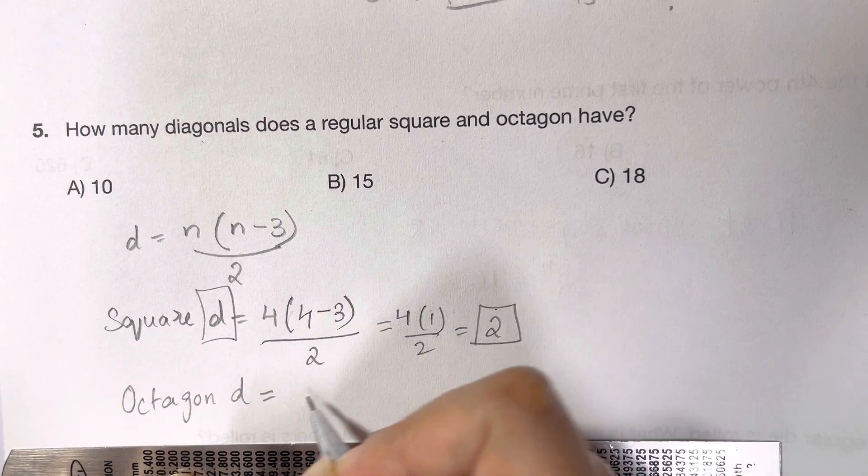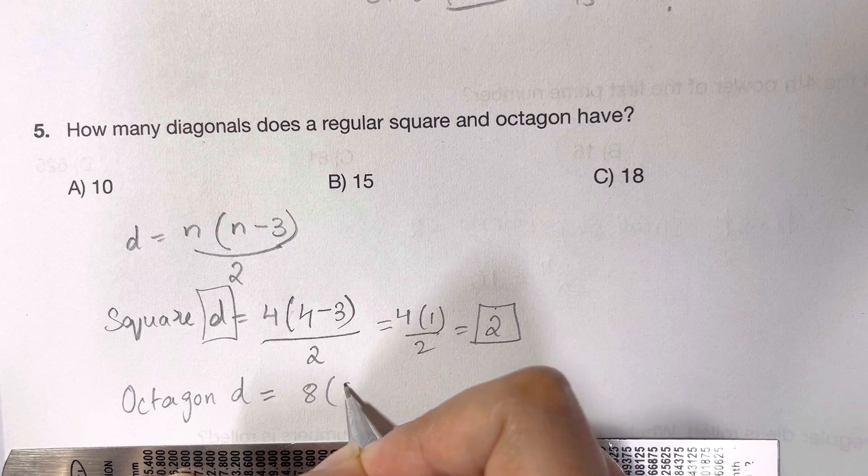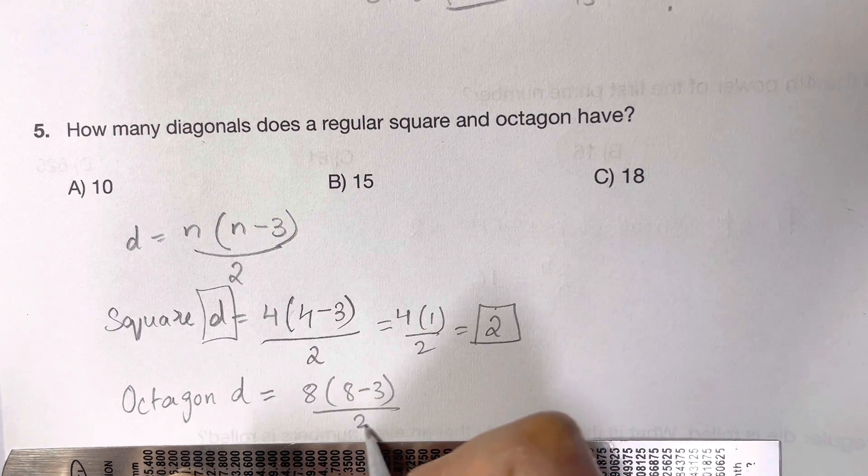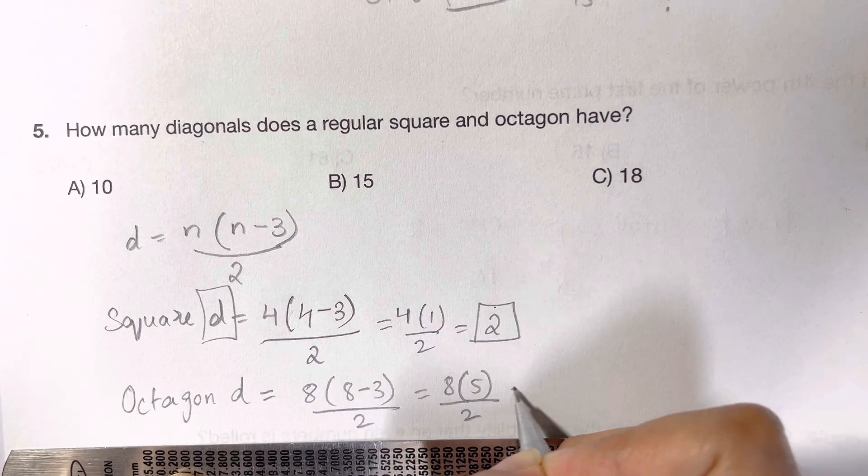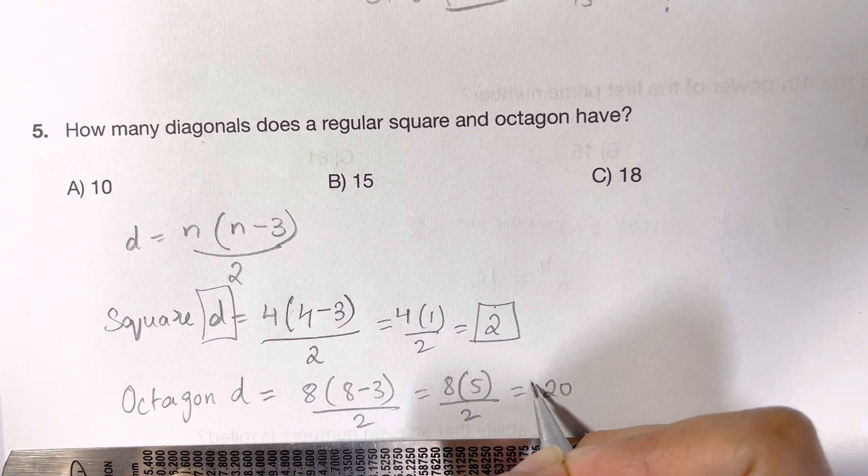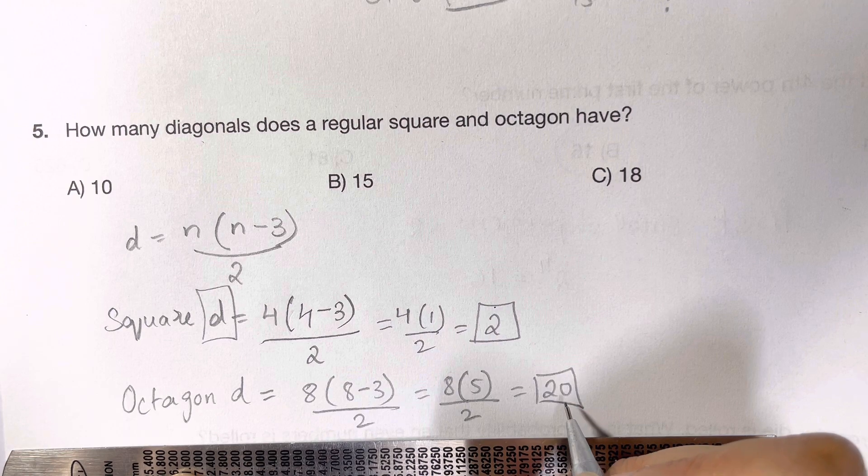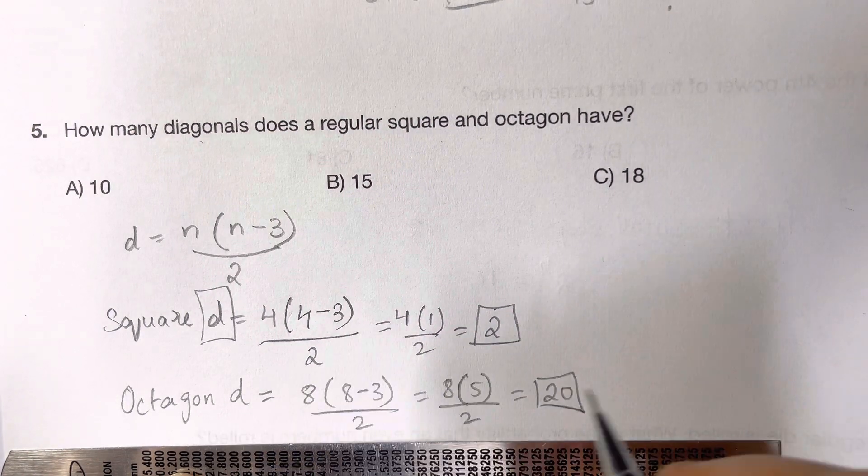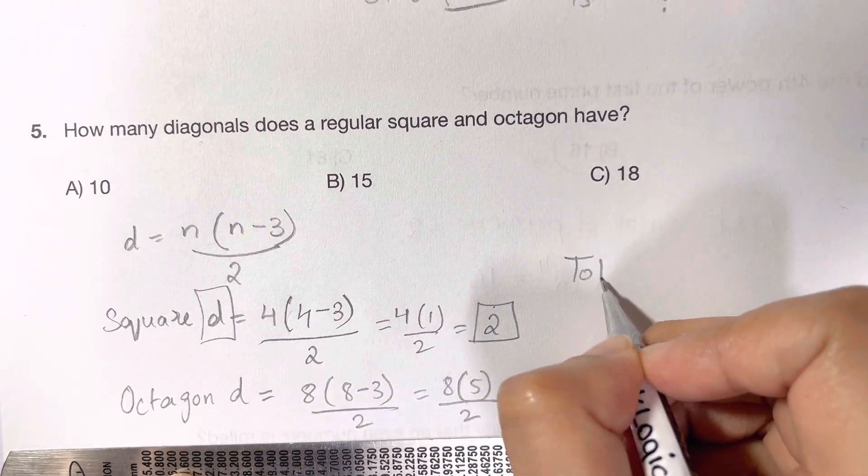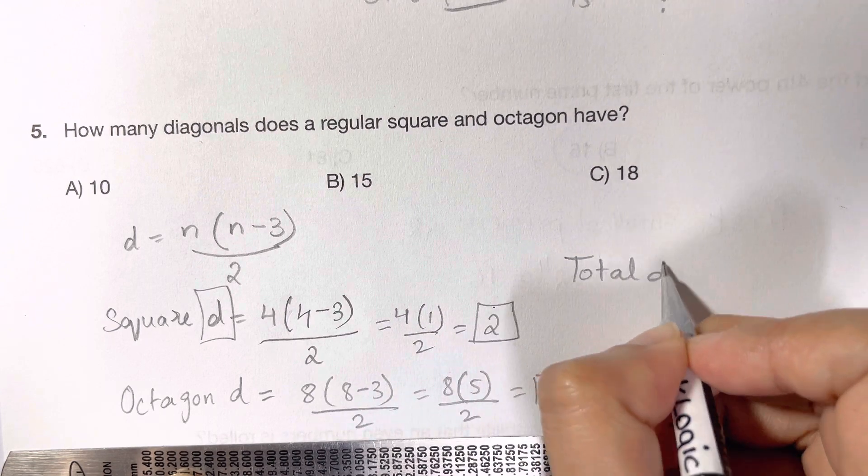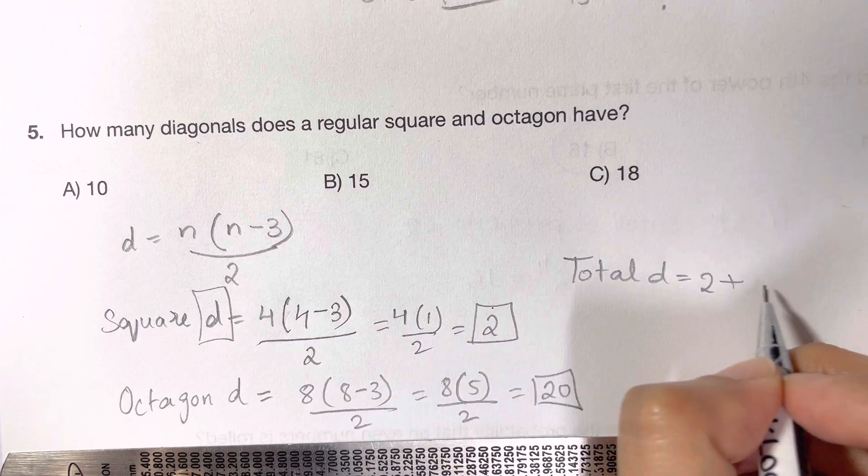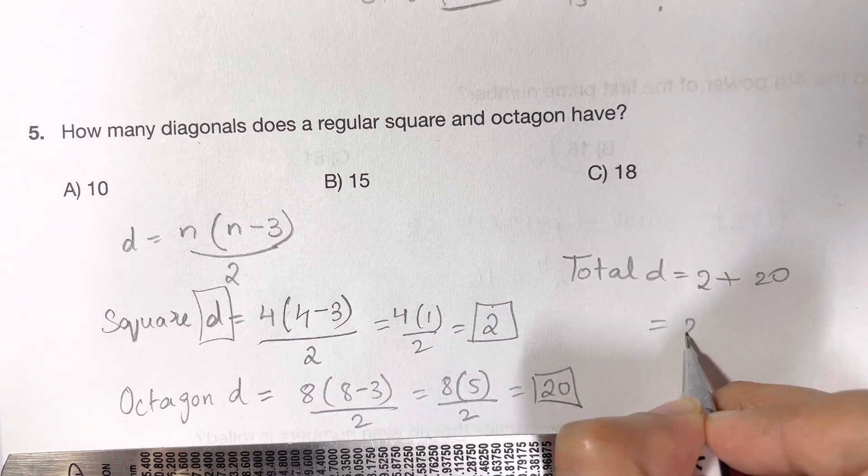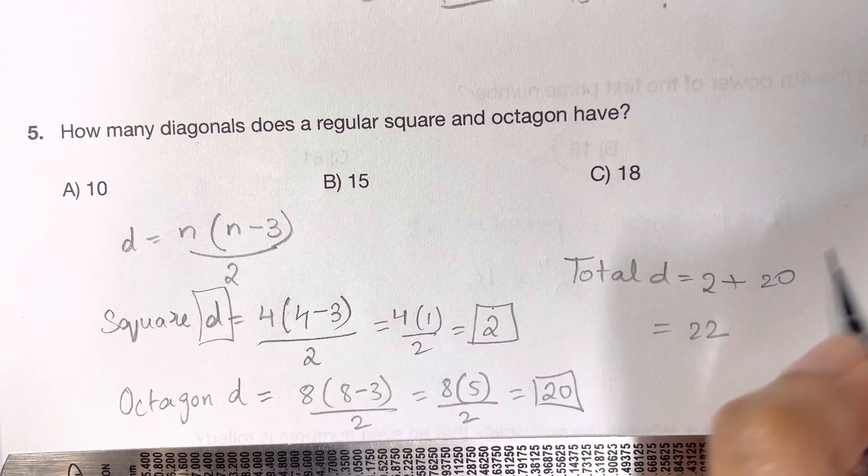Number of diagonals for an octagon: an octagon has 8 sides. 8 multiplied by 8 minus 3 over 2, that's equal to 8 times 5 over 2, that's equal to 20. So you have 20 diagonals in an octagon. Total number of diagonals is diagonals of square plus diagonals of octagon, that's equal to 22, and that's your answer, choice D.